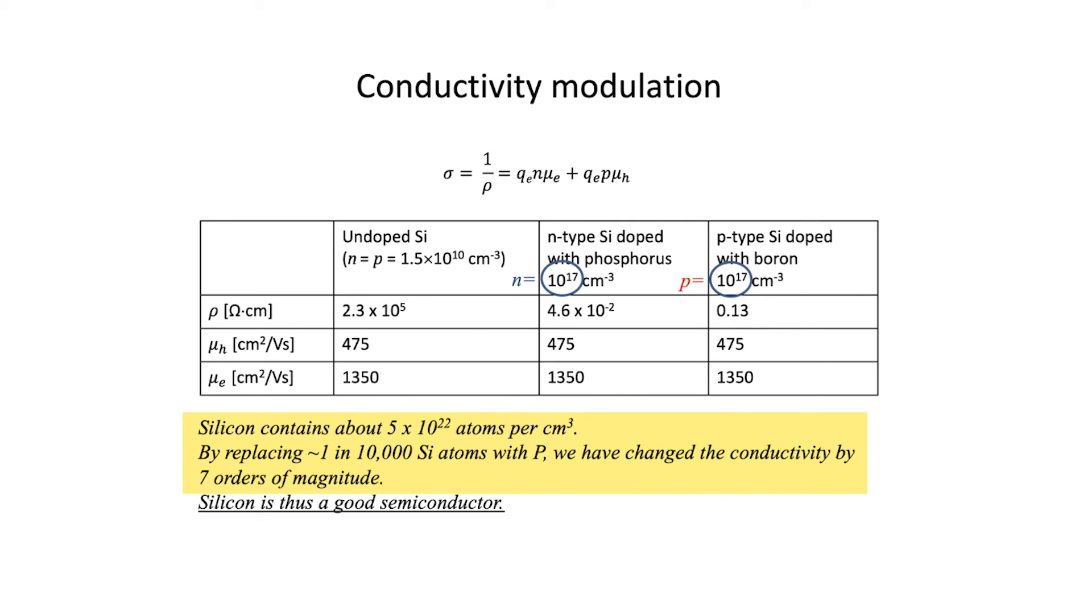We can now modify or engineer the conductivity of a material, and we can do it in a way that doesn't really change any of the thermal properties. The lattice is still intact. If you instead doped it with boron, then the reason why the resistivity is a little higher is because the hole mobility is not quite as high as the electron mobility is. So if you have the same doping of phosphorus in a silicon wafer as you did with boron in another wafer, the n-type or phosphorus-doped silicon will be a bit more conductive.